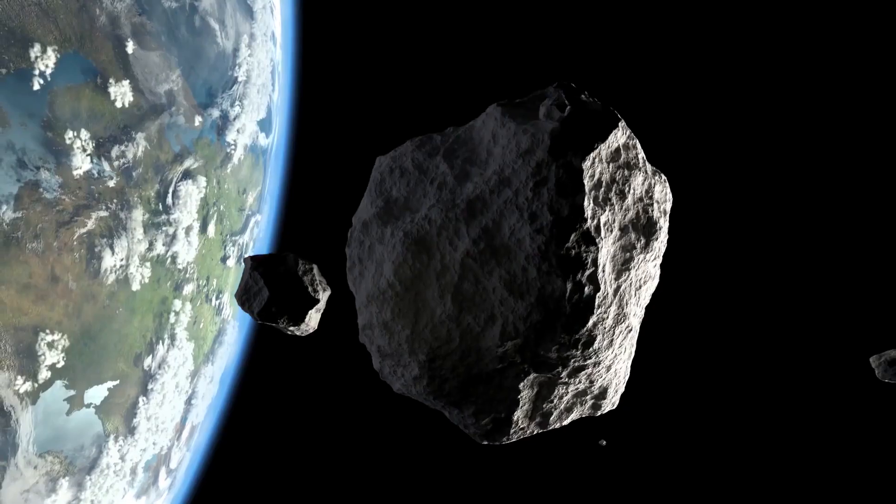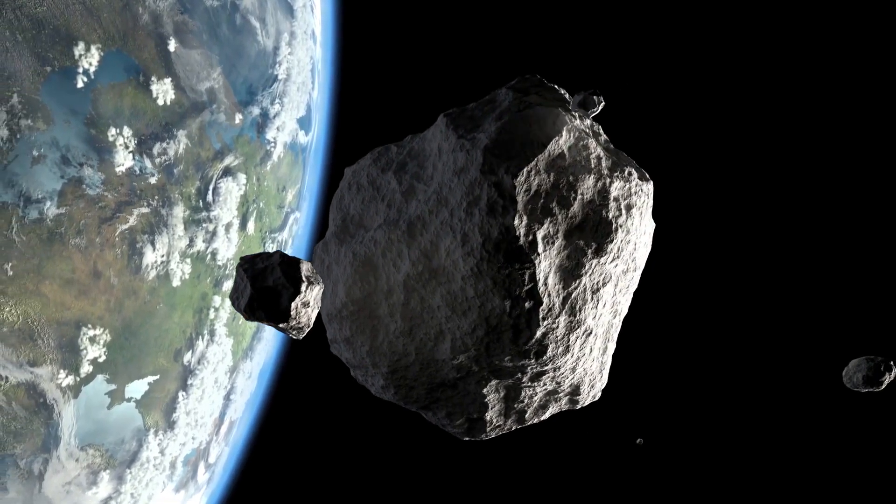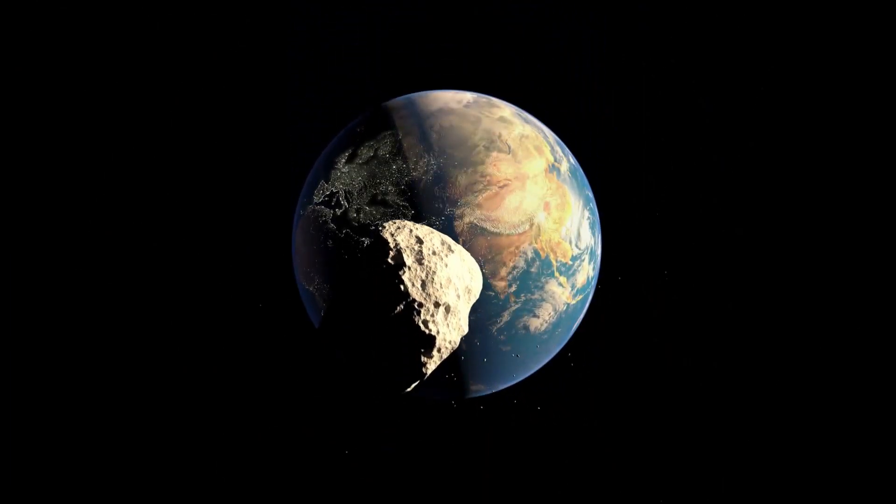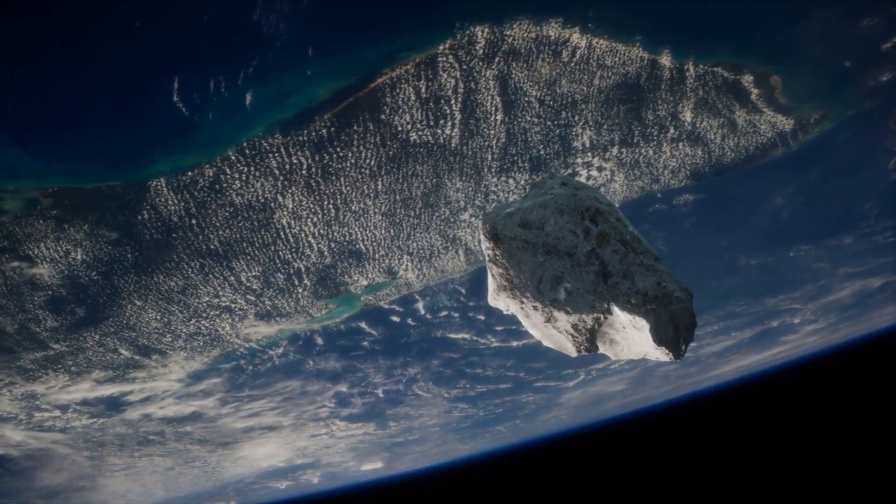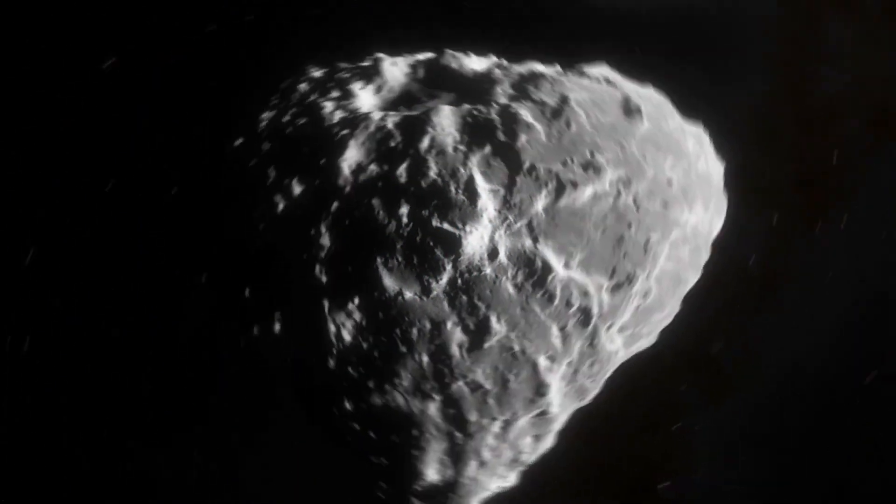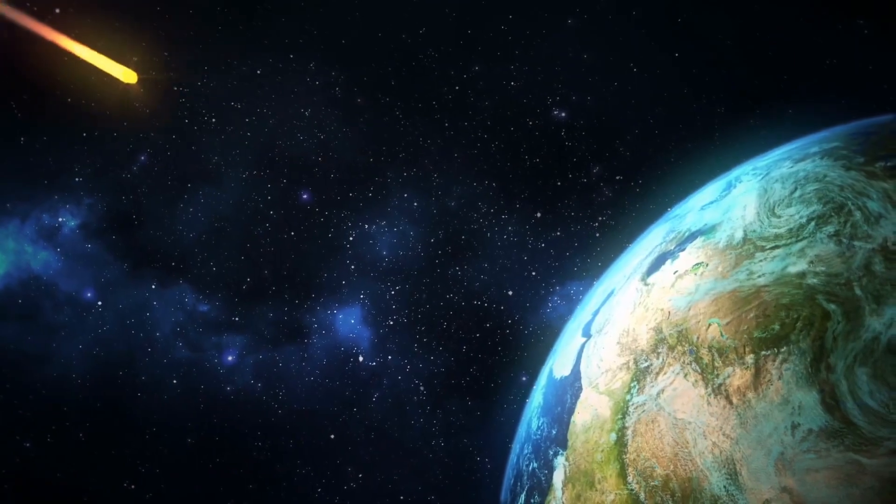And very soon, in 2029, this asteroid will approach a critically small distance. So small that the asteroid, in addition to its official name Apophis, was also given the nickname Killer of the Earth. What is known about Apophis?